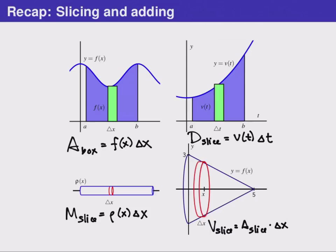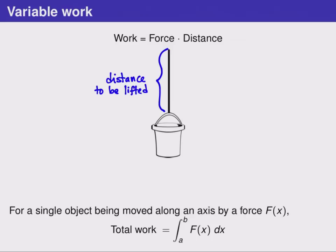In each case, we multiplied two quantities that we were interested in, something given by a function, and something representing the width or thickness of a very thin slice, and that gave us the new quantity that we were interested in. Now we're going to take a look at some physics quantities that we can use in a similar way.